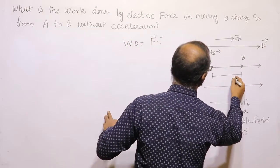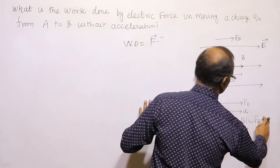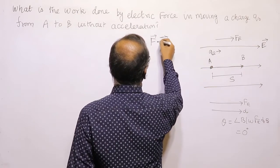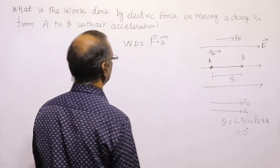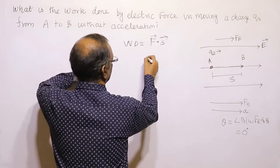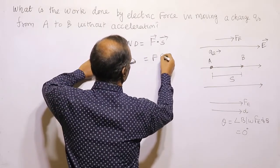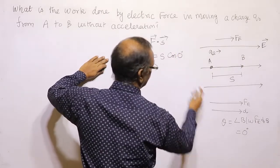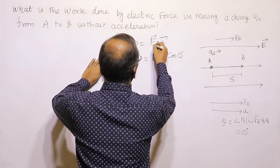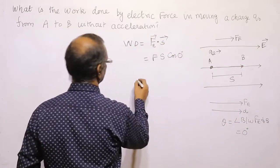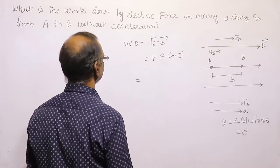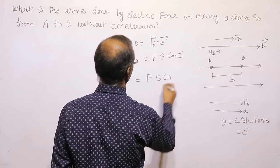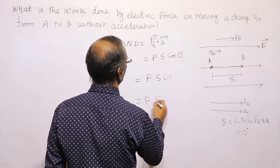We are using displacement as S, so work done is F dot S. Since the dot product of two vectors is always a scalar, work done is a scalar. Therefore, work done equals the modulus of F into modulus of S into cos of the angle between F and S, which is 0 degrees. So work done equals F_E into S.